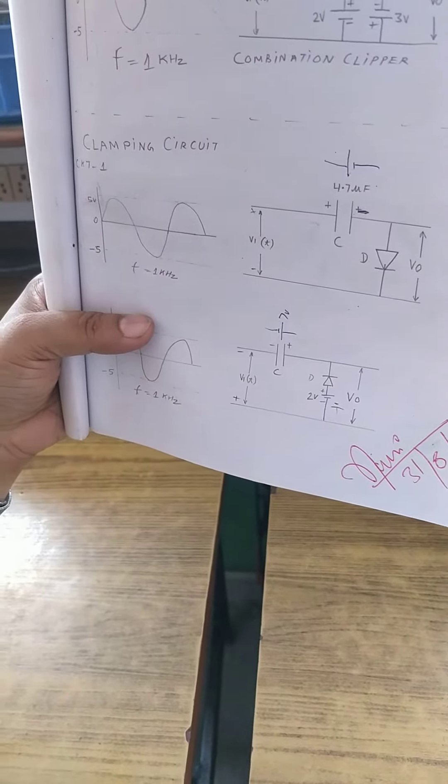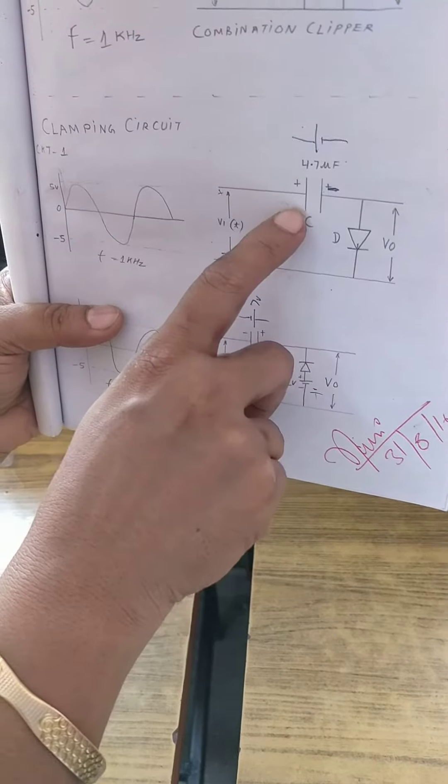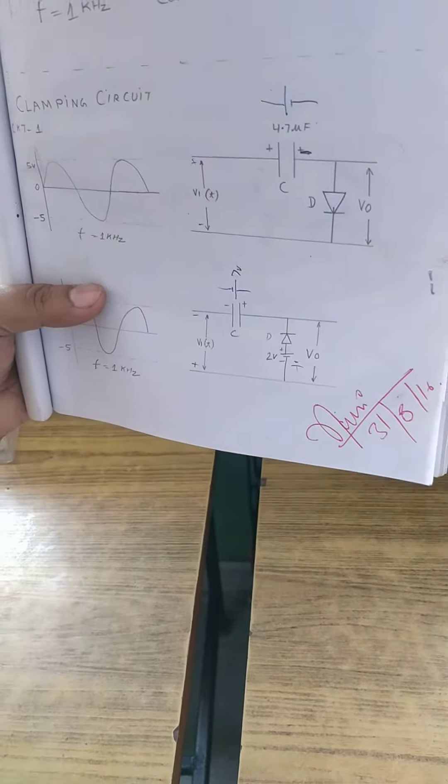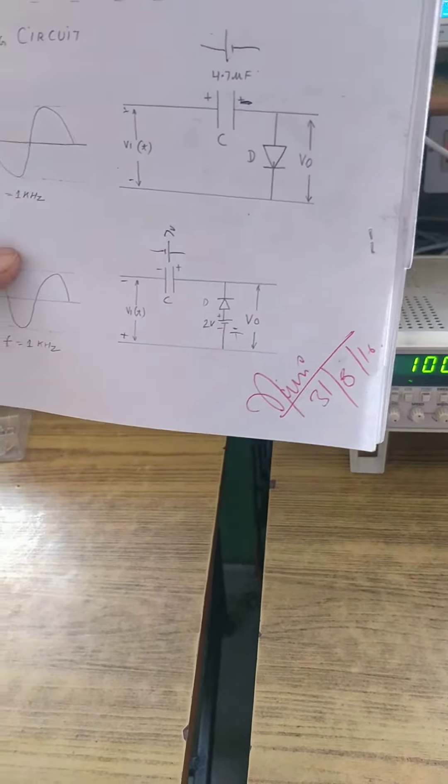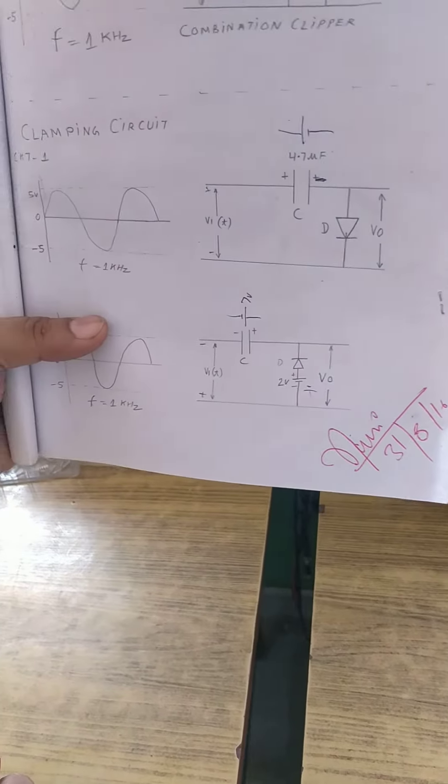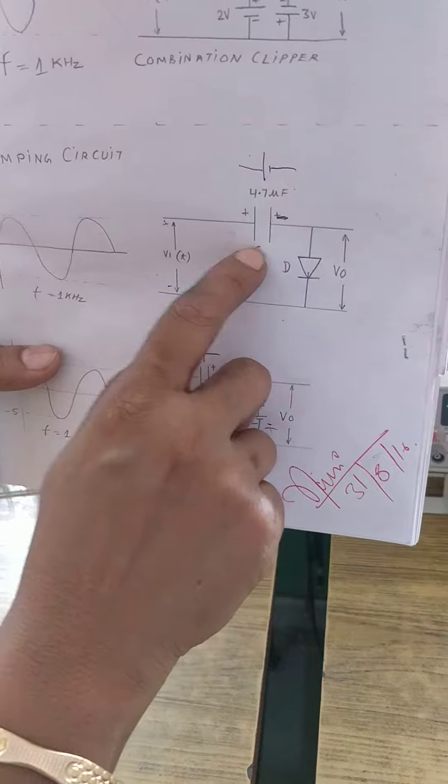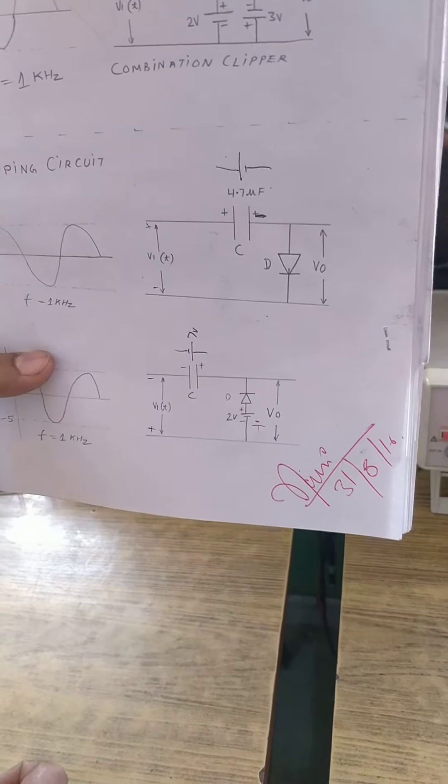This is a simple clamper circuit where you use a capacitor and a diode with so and so polarity. Now, the one condition is being used in clamper that we always start with a cycle which actually charges the capacitor. So this is process of charging and discharging of capacitor.